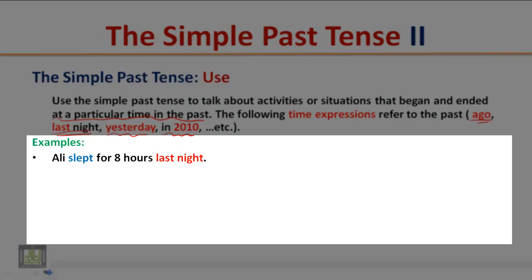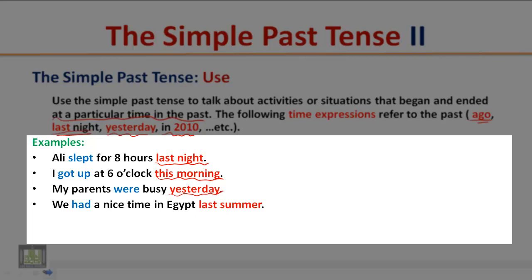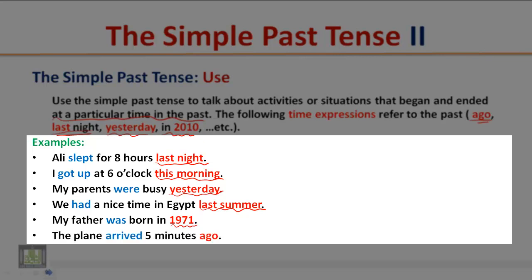Examples: I slept for eight hours last night — 'last night' refers to the past. I got up at six o'clock this morning — 'this morning' refers to the past. My parents were busy yesterday — 'yesterday' refers to the past. We had a nice time in Egypt last summer. My father was born in 1971. The plane arrived five minutes ago — 'ago' refers to the past.